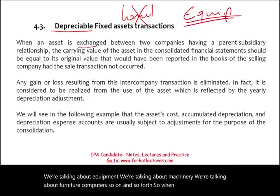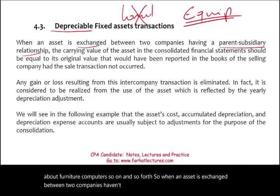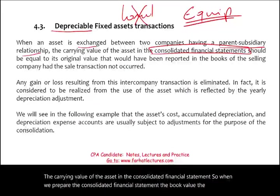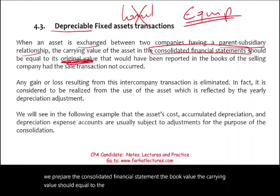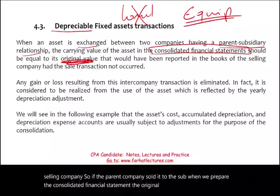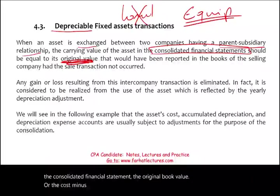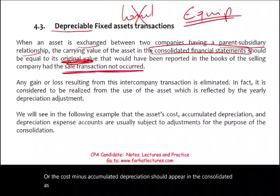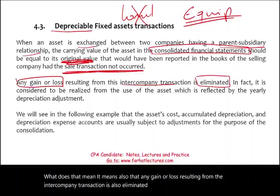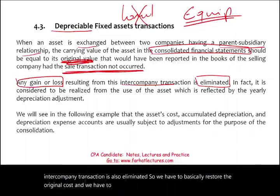When an asset is exchanged between two companies in a parent-subsidiary relationship, the carrying value of the asset in the consolidated financial statement should equal the original value that would have been reported by the selling company. The original book value — cost minus accumulated depreciation — should appear in the consolidated statements as if the sale did not occur. Any gain or loss resulting from the intercompany transaction is also eliminated.